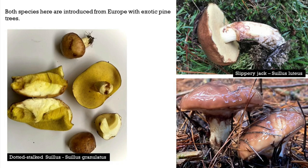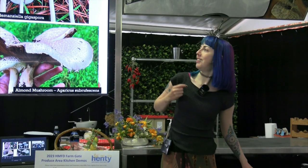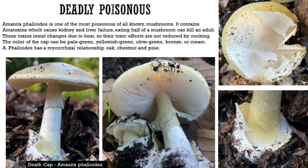Slippery jacks are boletes that grow in pine plantations. A lot of people foraging in pine plantations gather slippery jacks and saffron milk caps. You peel off the outer gelatinous layer and cook what is left; they also grow with a lot of introduced species. Other edible mushrooms include field mushrooms, and the hedgehog mushroom — Hydnum — which is one of the easiest to identify because you don't see many with teeth like that.